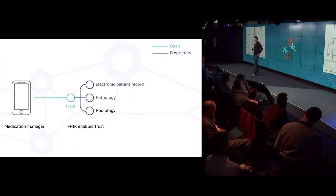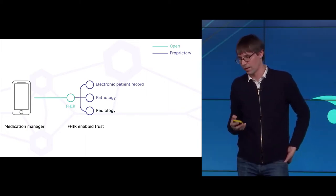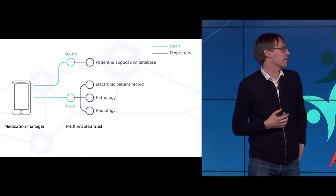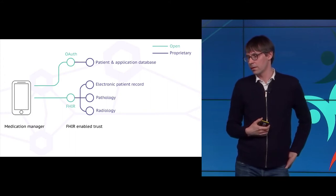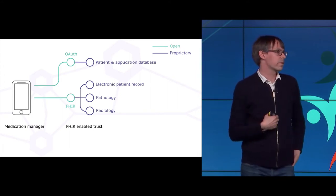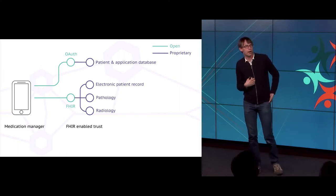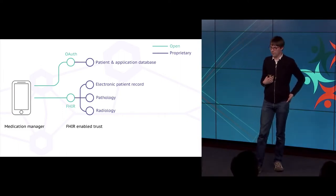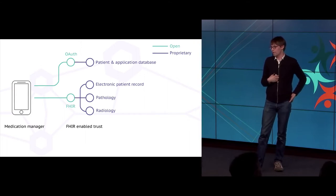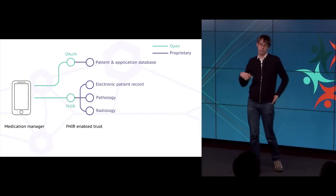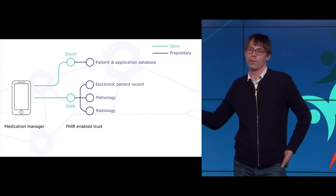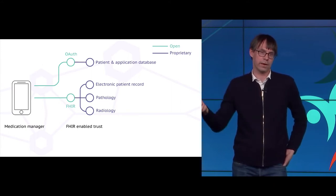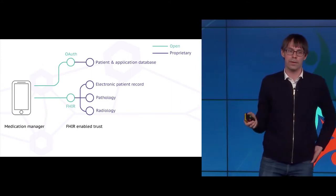Just getting access to the data is one small part of the problem — you also need authorization to access this data. The obvious way to do that is through a second standard called OAuth. OAuth is a standard used for gaining access to resources, used by many tech companies. If you've used sites that say 'log in via Google', 'log in via Facebook', 'log in via Twitter', it bounces you off to a second site. That protocol under the covers is OAuth, and the same can be applied to FHIR.